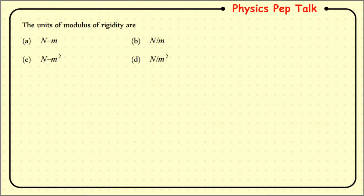Next question: what is the unit of modulus of rigidity? Modulus of rigidity is defined as tangential stress divided by tangential strain. Since strain has no unit, the unit is the same as stress, which is force divided by area — that is newton per meter square. Therefore option D is the correct answer.